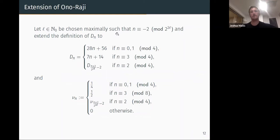So this looks horrible. So let l in n0 be chosen maximally such that this congruence holds. But the idea is we define D_n in a similar way to Ono-Raji depending on n mod 4, and if n is 2 mod 4, l allows us to get back in one of the previous cases. So we can just reduce if n is 2 mod 4. The same thing, another number omega_n is our factor in front. So it's either a quarter or a half. And again, if n is 2 mod 4 we get to reduce back.